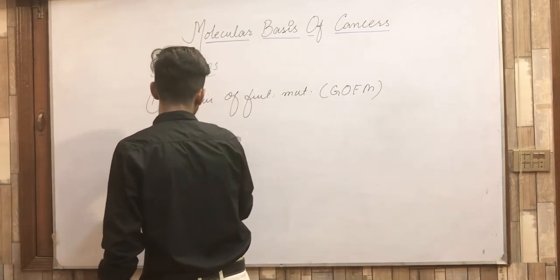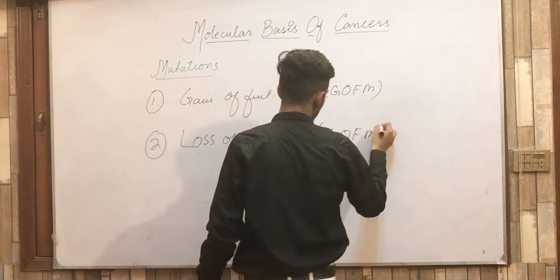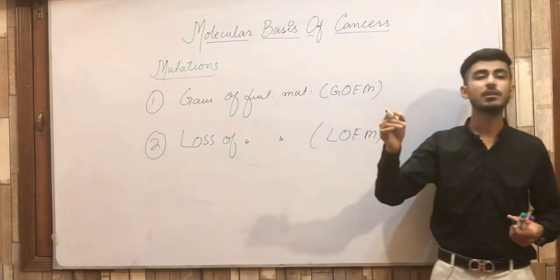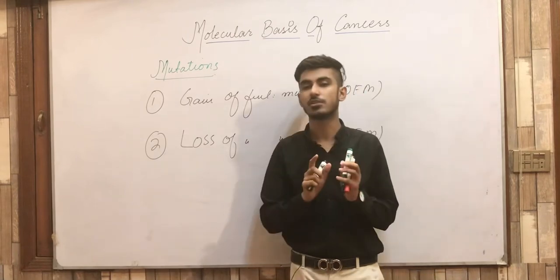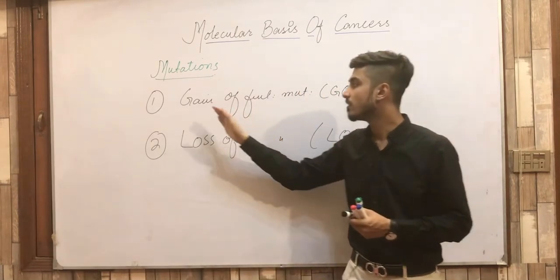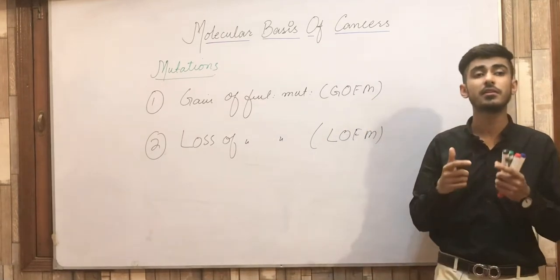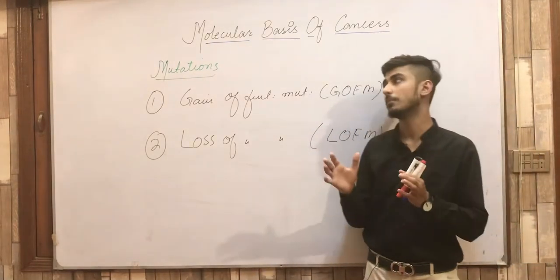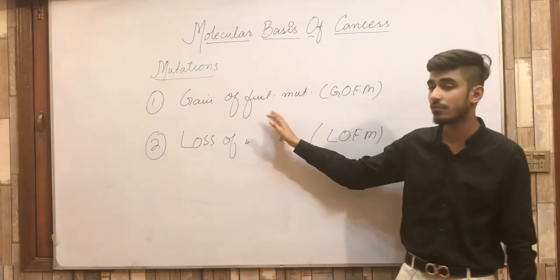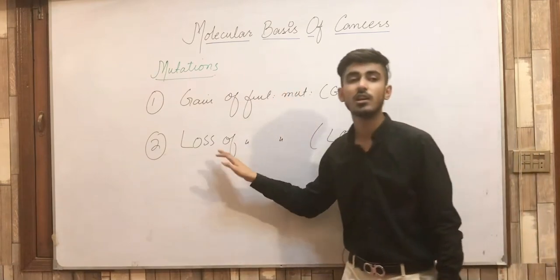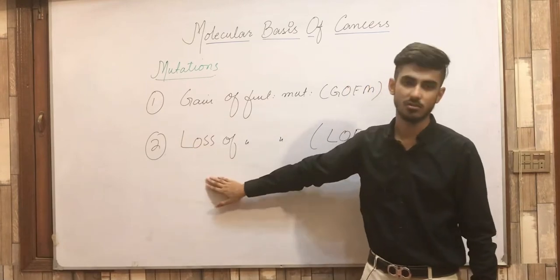The second type is the loss of function mutation. As its name indicates, there will be a loss of function of the gene, meaning the gene becomes non-functional. These are the two terminologies that are very important and will be continuously repeated throughout the chapter on neoplasia. You have to remember what gain of function mutations and loss of function mutations are — just remember them by their names: gain and loss.